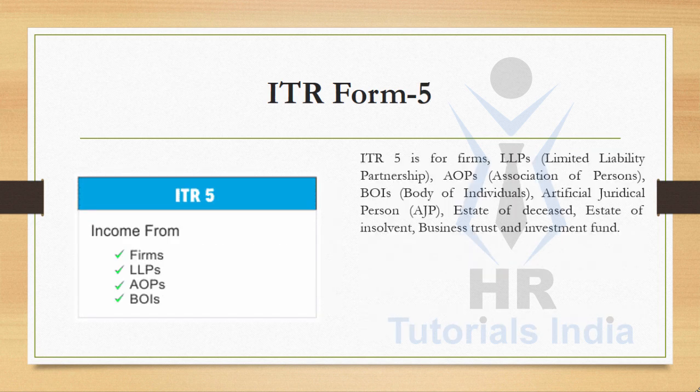ITR Form 5 is for firms, LLPs (Limited Liability Partnerships), AOPs (Association of Persons), BOIs (Body of Individuals), AJP (Artificial Judicial Person), estate of deceased, estate of insolvent, business trust, and investment fund.